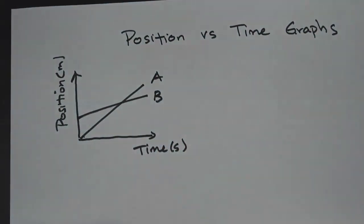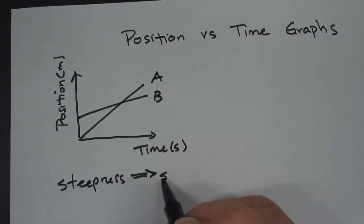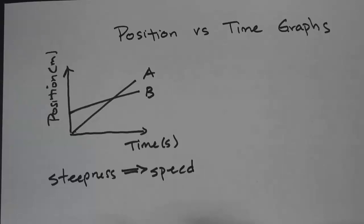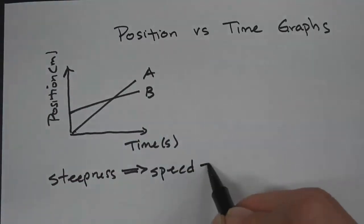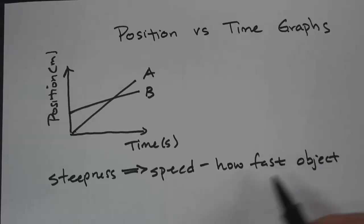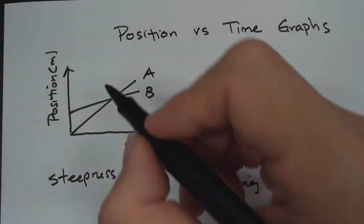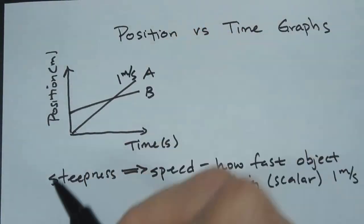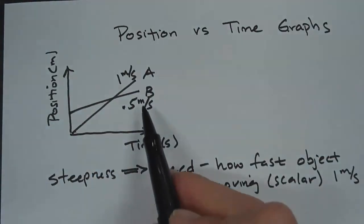On a position versus time graph, the steepness represents the speed of the object. So the steeper it is, the faster it's moving. You can tell that object A is going faster because this line is steeper than B. So object A is going faster. A might have a slope or steepness of 1 meter per second, and B might have half of that — so B might be 0.5 meters per second, and B is not as steep as A.